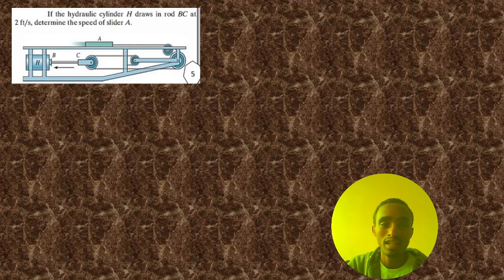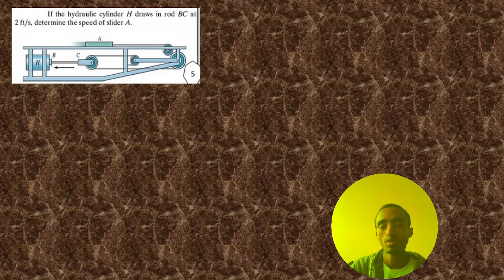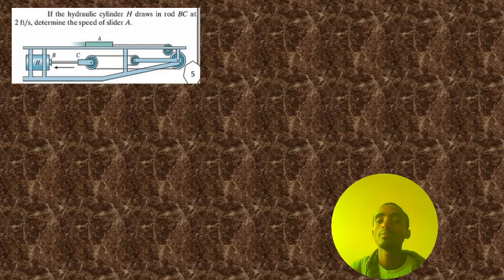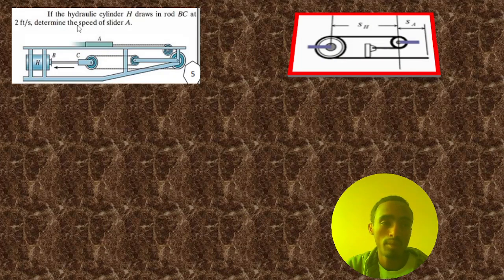As you can see here, this problem is about the motions of a constrained particle where the motion of one particle is dependent on the motion of another particle. We can solve this problem based on that concept. So before doing anything, first we can draw the free-body diagram of this problem. It's a hydraulic cylinder H.